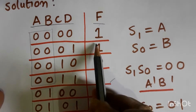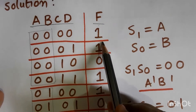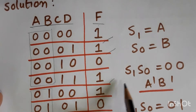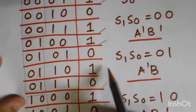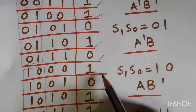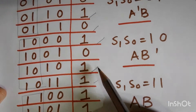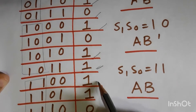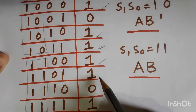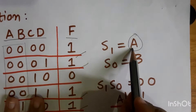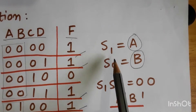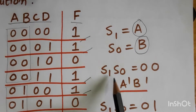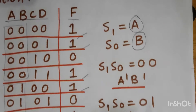f is true for minterms 0, 1, 3, 4, 6, 8, 10, 11, 12, 13, and 15. S1 is a and S0 is b — a and b are the selection lines. The selection line combinations are: 00, 01, 10, and 11.